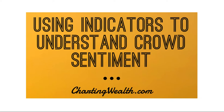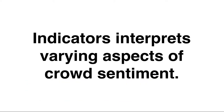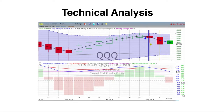Indicators are the best way to understand crowd sentiment. We're going to use this training to explain our main indicators on our charts and what they specifically do for you in understanding what the crowd, what the market is thinking about particular stocks and ETFs. Indicators interpret varying aspects of crowd sentiment. There are dozens of indicators, each of them typically a fairly simple arithmetic formula that is depicted graphically on the charts that we use under our form of technical analysis. We also refer to that as charting.